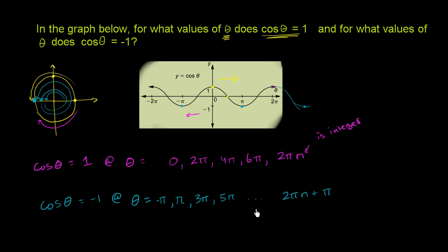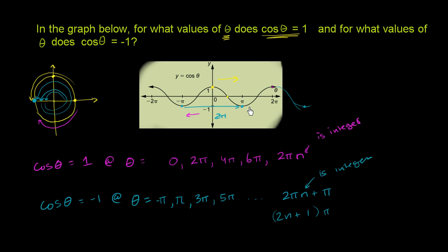Or you could view it as (2n + 1) times pi, where n is an integer. At every one of those thetas, cosine of theta keeps hitting negative 1 over and over again. It goes from one valley to the next valley — it takes 2 pi to get to the next valley, and 2 pi again to the one after that. And that's also the same for the peaks: it took 2 pi to go from the top of one hill to the top of the next, and 2 pi again to the top of the hill after that.